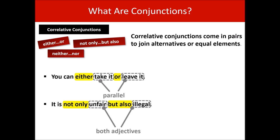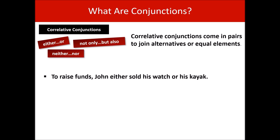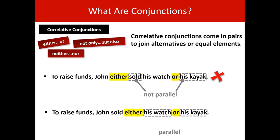To raise funds, John either sold his watch or his kayak — 'either/or' is our correlative conjunction, but this example is not parallel. A verb follows 'either,' but a noun phrase, 'his kayak,' follows 'or.' So this is wrong. The corrected version: To raise funds, John sold either his watch or his kayak. Now 'his watch,' a noun phrase, follows 'either,' and 'his kayak,' a noun phrase, follows 'or.' This one is parallel and correct.